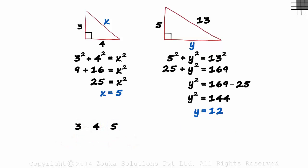In a similar way, five, twelve and thirteen also form a Pythagorean triple. These are two very commonly used Pythagorean triples. But there's something even more special here.